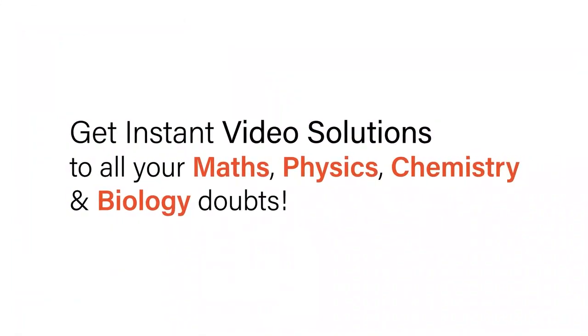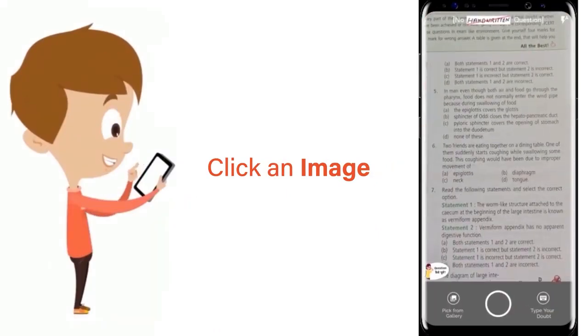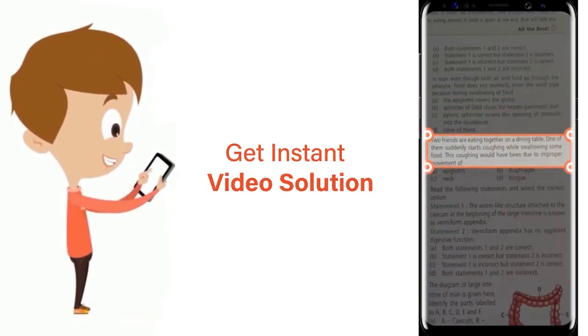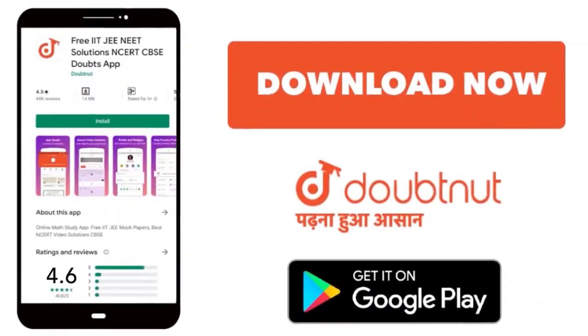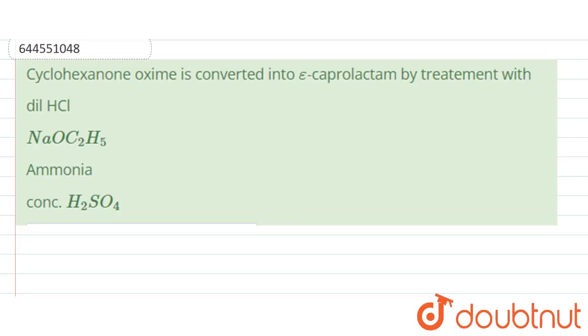With Doubtnet, get instant video solutions to all your maths, physics, chemistry, and biology doubts. Just click the image of the question, crop the question, and get instant video solution. Download Doubtnet app today. Hello students, our question is cyclohexanone oxide is converted to epsilon caprolactam by treatment with...